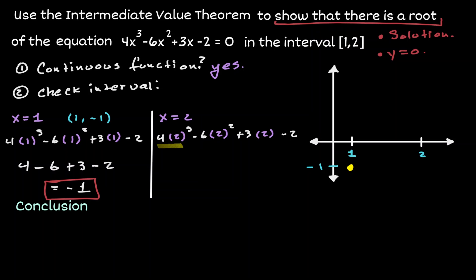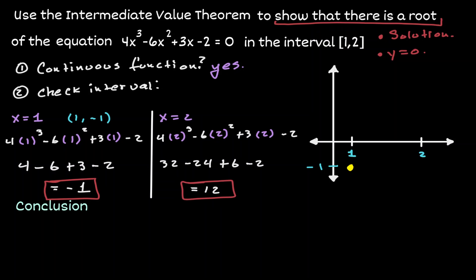In our first evaluation we get 32, in our second we get negative 24, in the third we get 6, and we bring down the negative 2. When we combine all these values we get 12. So within the given polynomial, when we plug in x equals 2, we get the y value of 12. The polynomial passes through the coordinate point (2, 12).